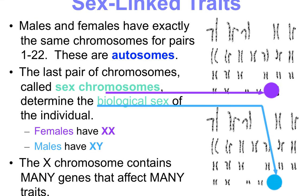Sex-linked traits are a little different. Males and females have exactly the same chromosomes for pairs one through 22 — those are called autosomes. But that last pair are called sex chromosomes, and those determine your biological sex. Females are XX and males are XY. The X chromosome contains many genes that affect many different traits.